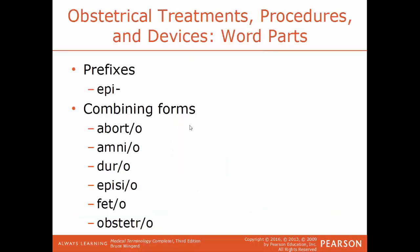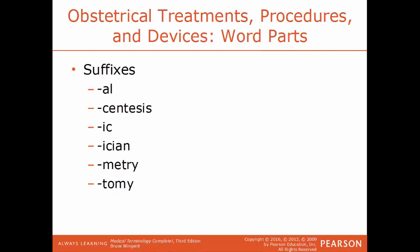Now we'll talk about some treatments, procedures, and devices in regards to obstetrics. Word parts — prefix epi means above. Combining forms: aborto is abortion; amnio is the amniotic sac; duro is the dura mater; episio is the vulva; feto is a fetus; obstetro is pregnancy or birth. Suffixes: al means pertaining to; centesis is a puncture, usually to withdraw fluid; ician is a specialist; metry is a process of measuring; tomy is a process of cutting.